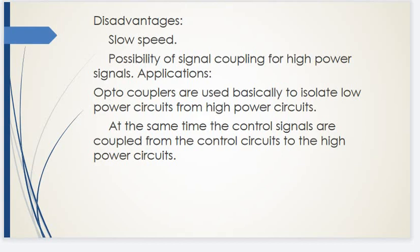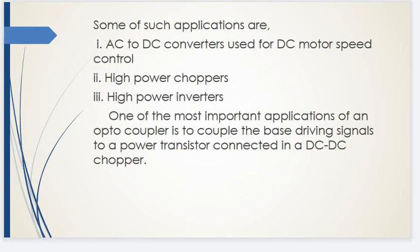Applications: Optocouplers are used basically to isolate the low power circuit from the high power circuit while coupling control signals to high power circuits. Some applications include AC to DC converters used for DC motor speed control, high power choppers, and high power inverters. One of the most important applications is to couple the basic driving signal to a power transistor connected in a DC to DC chopper.